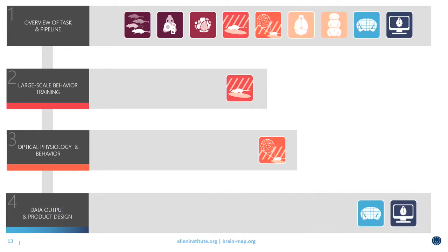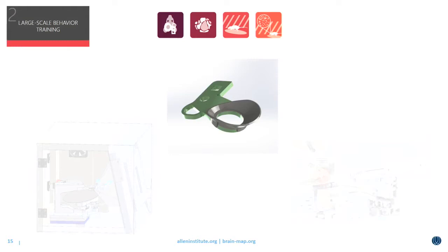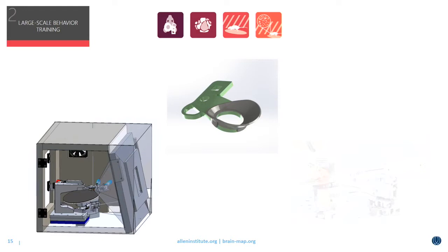Our inevitable goal is to collect data at scale, and in order to do that, we have to train at scale as well. We started by building a brand new behavior facility with 24 operant boxes that can train up to 100 mice per day. By working closely with the engineering team, we developed a new head frame with a unique clamp plate compatible with multiple behavior and imaging systems. This head frame is implanted during surgery and standardizes mouse positioning relative to a stimulus screen. A motorized lick spout and cross-registered head frame achieve consistent spout placement tailored to each mouse and repeatable across multiple platforms.